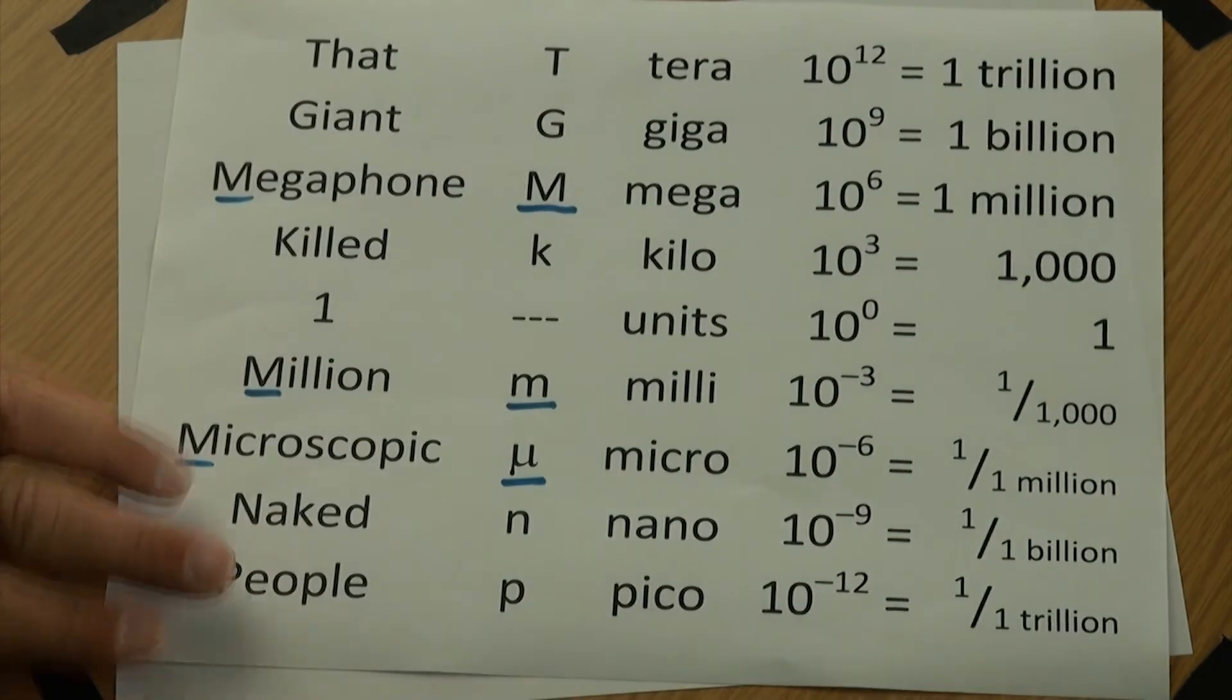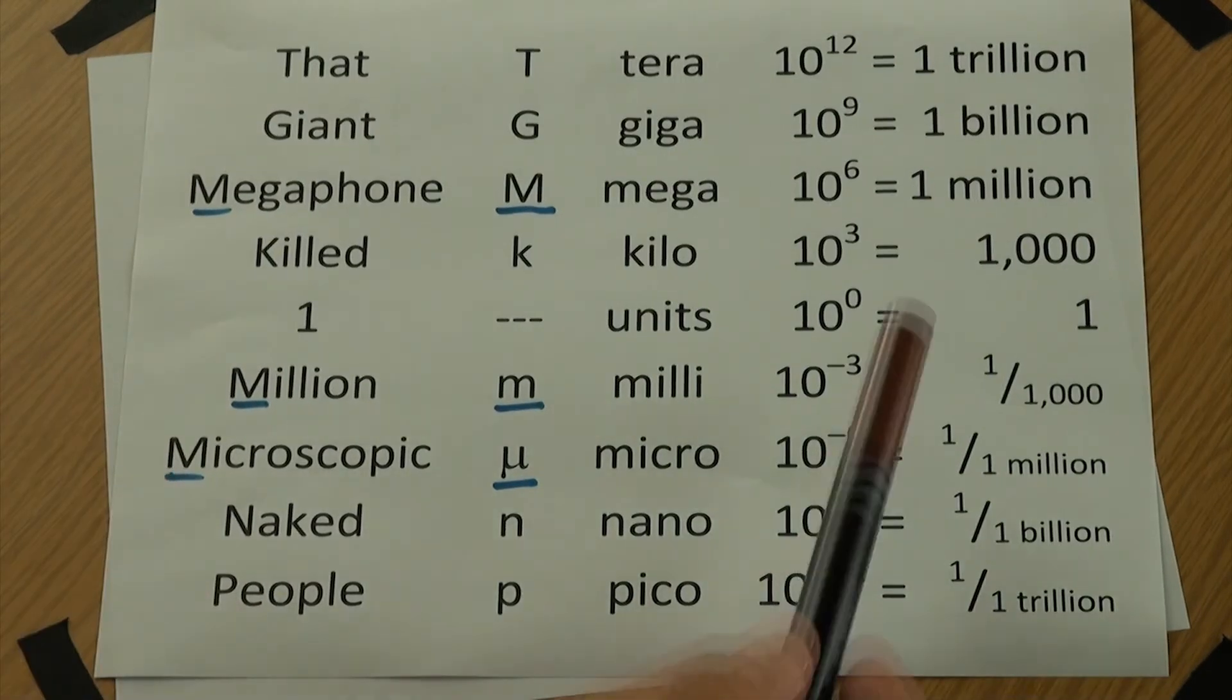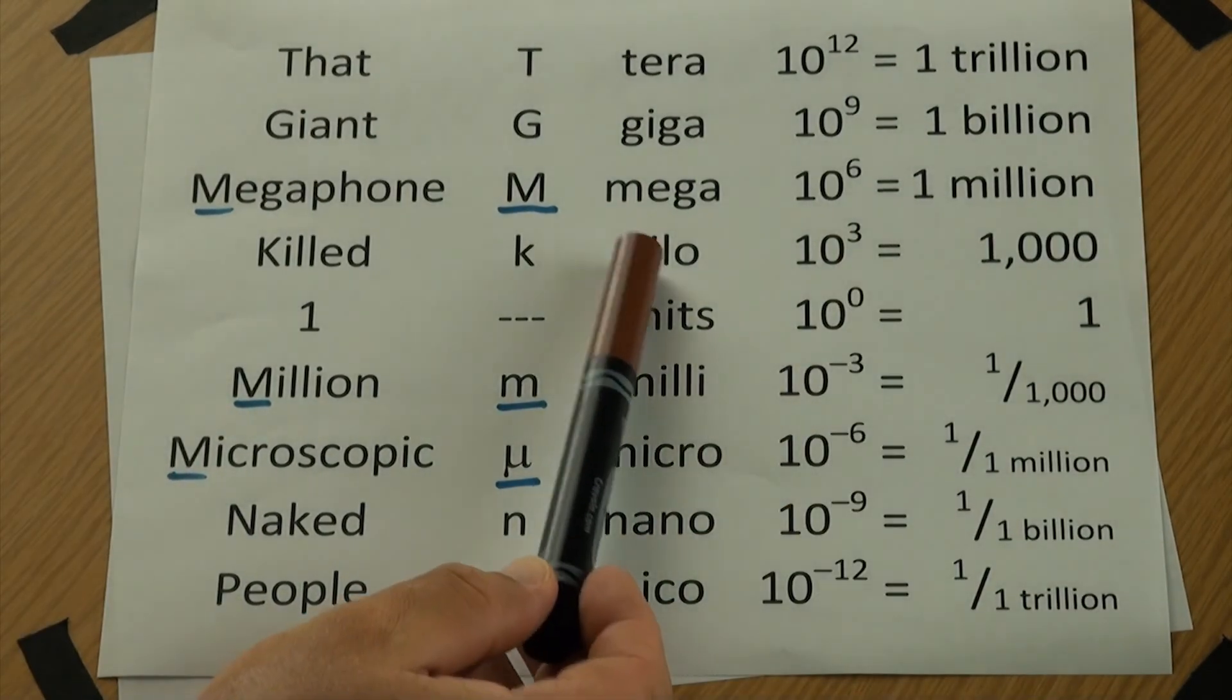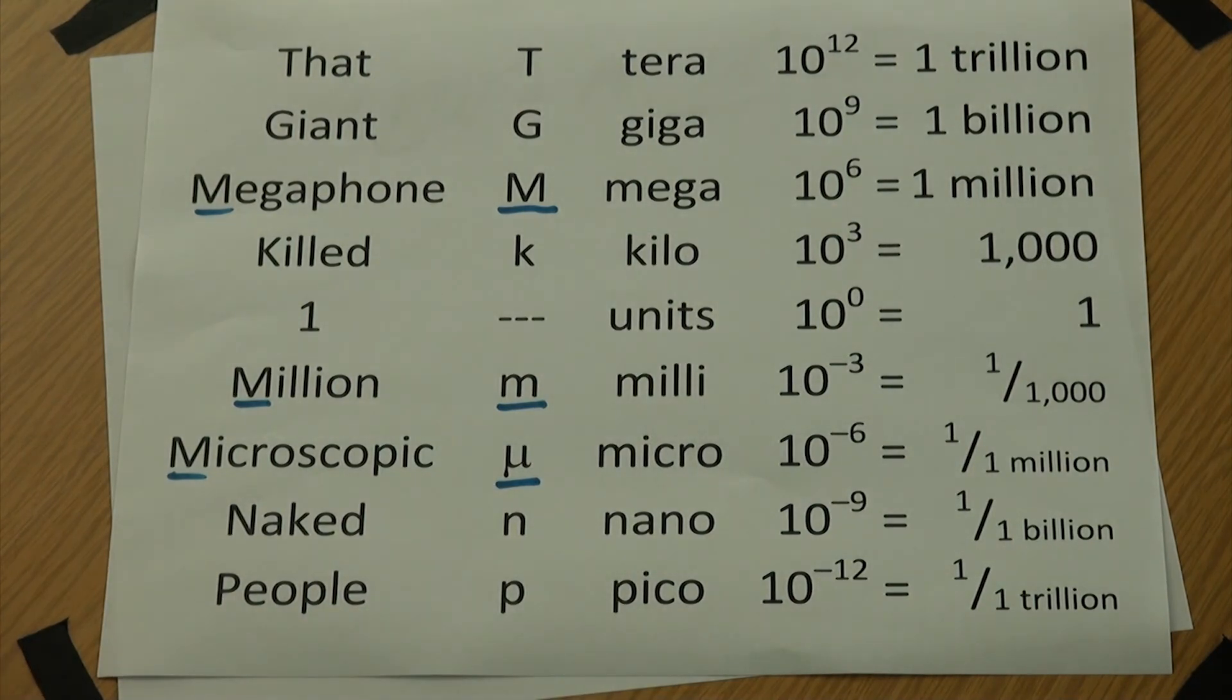Your calculator is going to express it in that way. It's going to put the E and then give you the exponent right behind it. Going back to our chart, we are always able to convert from that exponent back to our metric prefix that we need to be using for that.